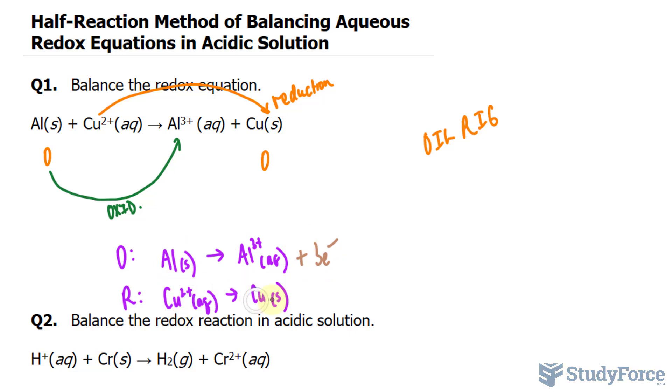Over here we have 2 plus and 0 here, so I'll add 2 electrons here. Now it's balanced both in mass and in charge.